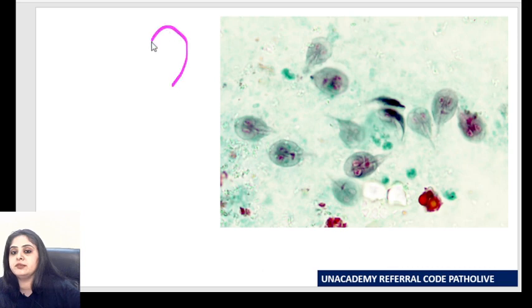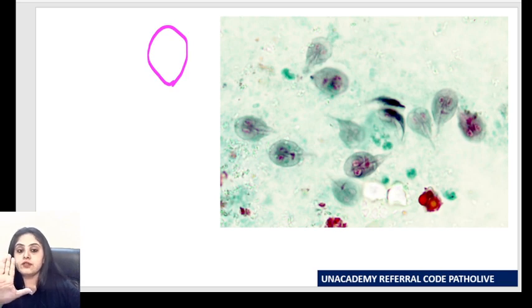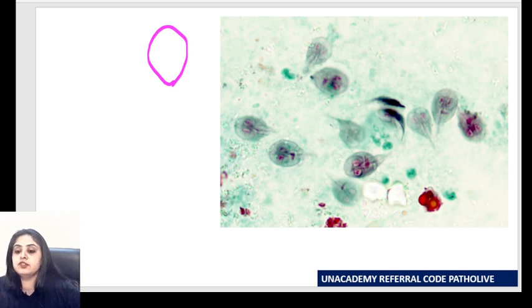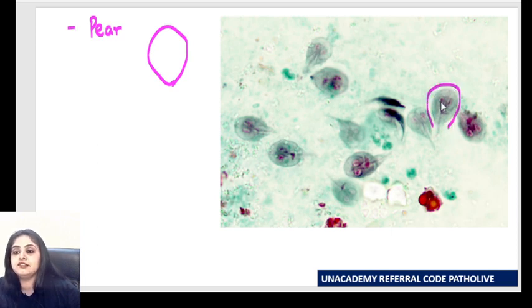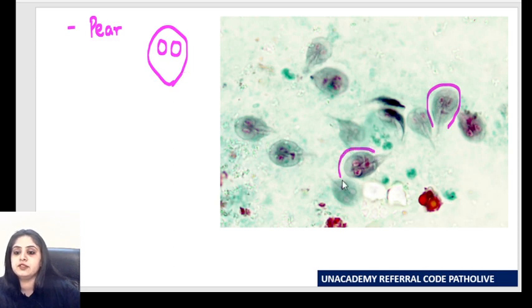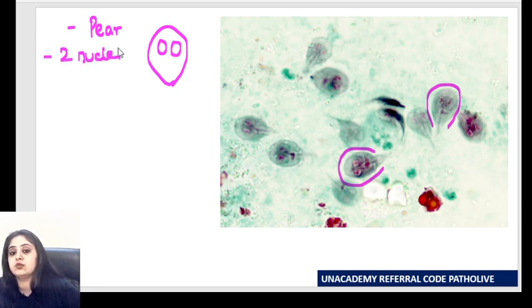Now let's talk about the organism. Do you see the shape? It's a very classical pear-shaped organism when you look at it from the front — the AP view. So first point: it is pear-shaped. Then, how many nuclei? I can see one and two — two nuclei. You'll actually end up drawing a man's face here, like two eyes. So the next finding is two nuclei, and then I need to find the flagella.